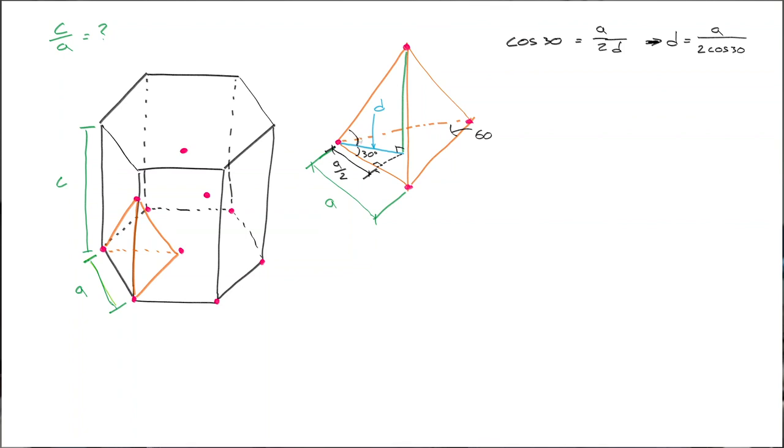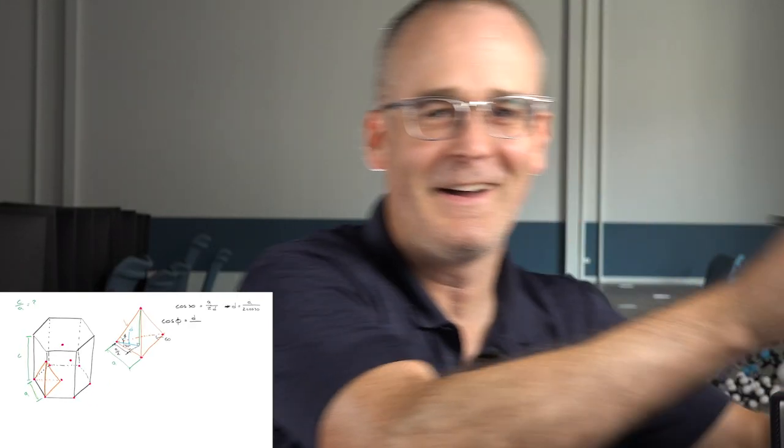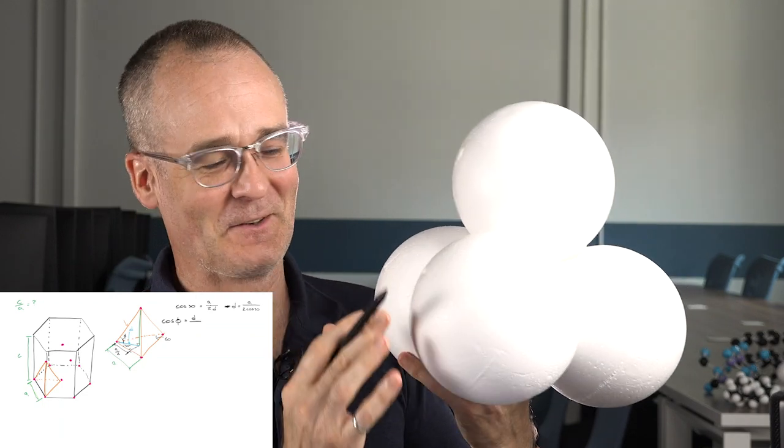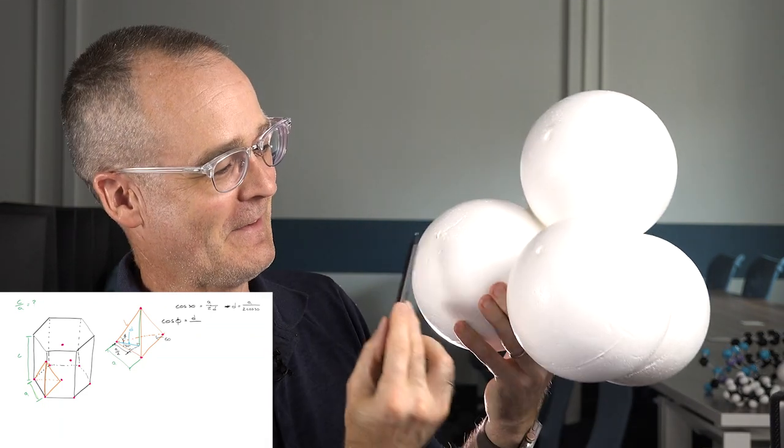Now what we'd like to do is establish this angle here. We're going to call that Phi. You've seen it before if you've watched my tetrahedral video and the RC to RA ratio for the tetrahedral interstitial site. We could say cos Phi is going to be equal to D over that hypotenuse. What's this length here?